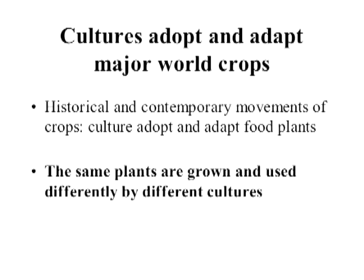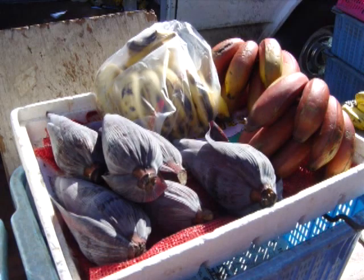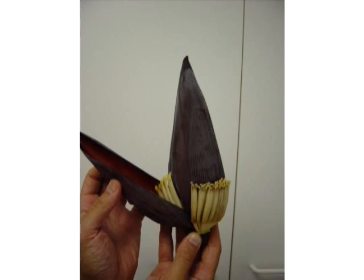Another consequence of crop movement is that the same plants are grown and used differently by different cultures today. Bananas are a great example: most people in the United States are familiar with only one type of banana, but there are many varieties eaten in different parts of the world. Not just the banana fruit is used — banana leaves are used for wrapping food in cooking, and banana flowers are an important part of some culinary traditions. In the U.S. bananas tend to be eaten raw and ripe, whereas in other places they're eaten green and cooked.